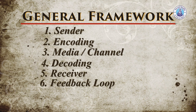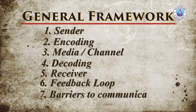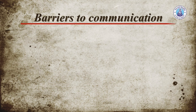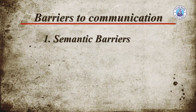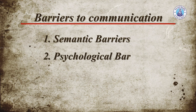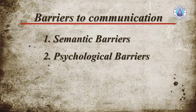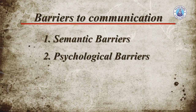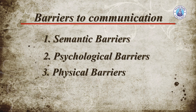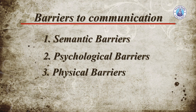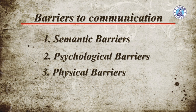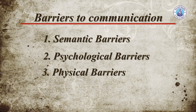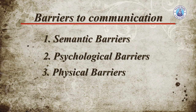The last point on this slide is barriers to communication. There are three barriers to oral communication. First, semantic barriers — language-related barriers. Second, psychological barriers, like inhibitions, shyness, or consciousness towards the status of the person you are talking to. Third, physical barriers — the environment must be conducive to both sender and receiver. If the physical environment is disturbing, effectiveness will be diluted. This is the typical general framework of effective communication.